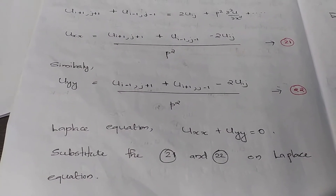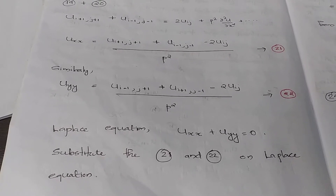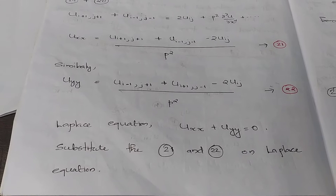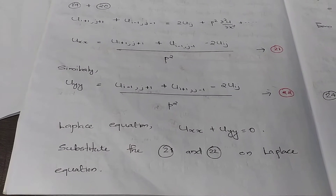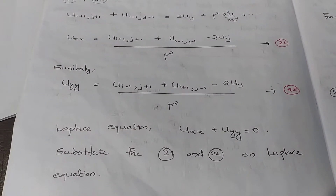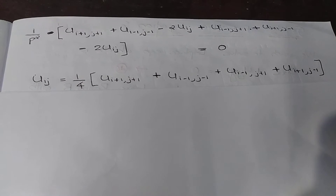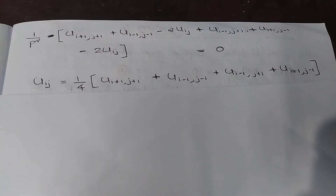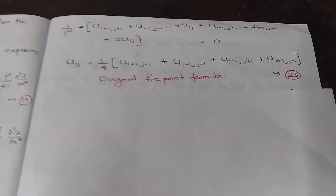Similarly, ∂²u/∂y² can be written in terms of u(i-1,j+1) and u(i+1,j-1), giving u(i-1,j+1) plus u(i+1,j-1) minus 2·u(i,j) divided by p², as equation number 22. Substituting both equations 21 and 22 into the Laplace equation u_xx + u_yy = 0 and rearranging, we get u(i,j) = (1/4)[u(i+1,j+1) + u(i-1,j-1) + u(i-1,j+1) + u(i+1,j-1)]. This is called the diagonal five point formula, equation number 23.